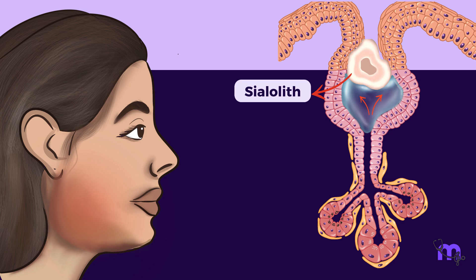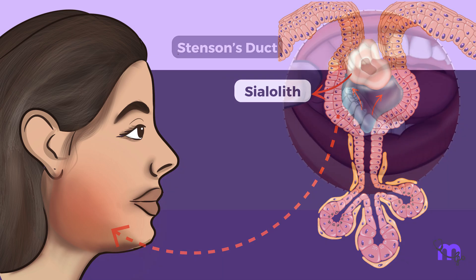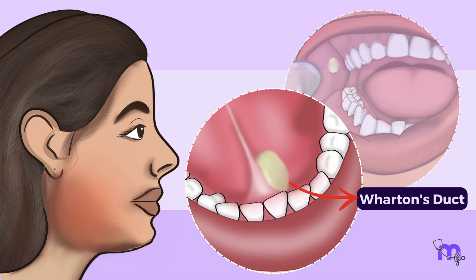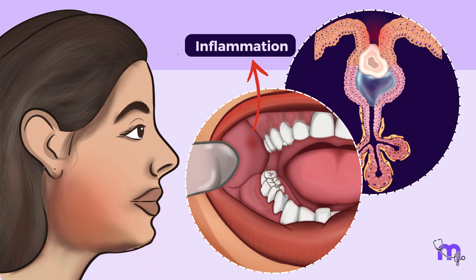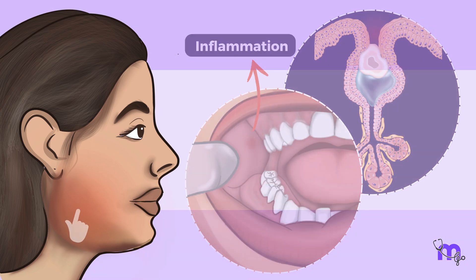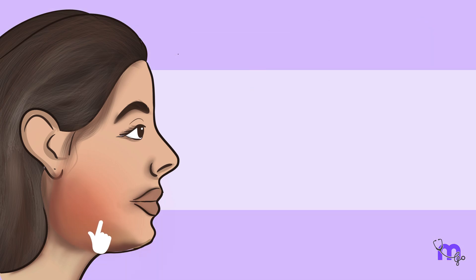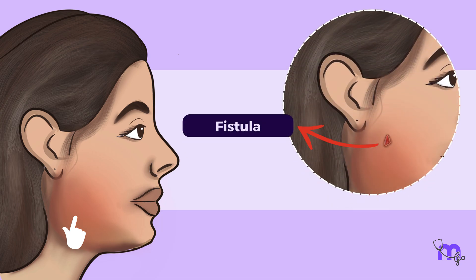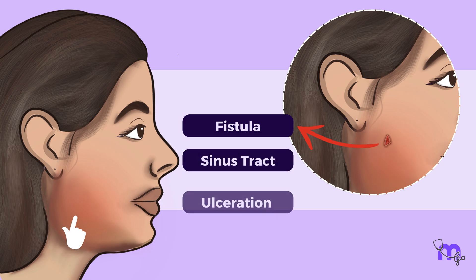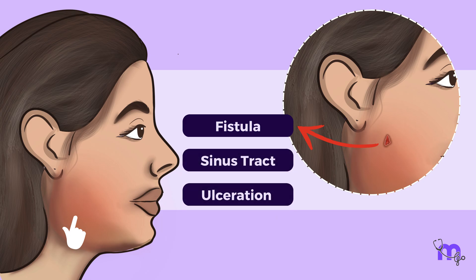However, a complete blockage traps all the saliva, leading to persistent swelling. At times, pus may drain from the duct along with inflammation of the ductal opening. The swollen gland is often tender on palpation. In chronic cases, complications like fistula, sinus tract, or even ulceration can occur in the tissue around the stone.